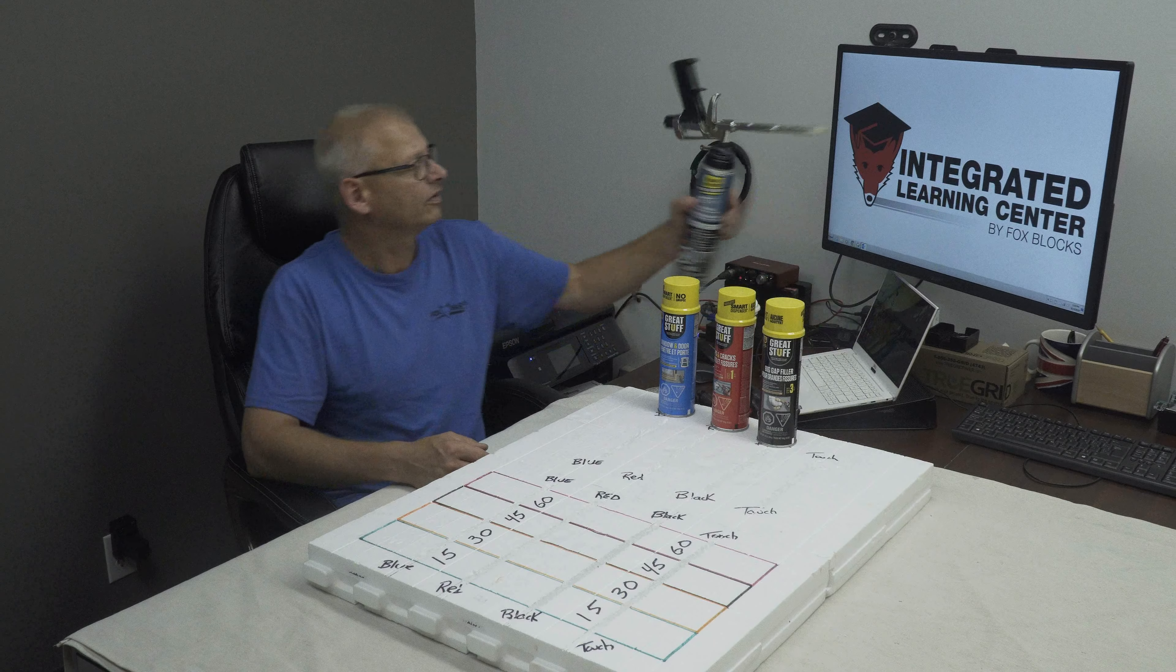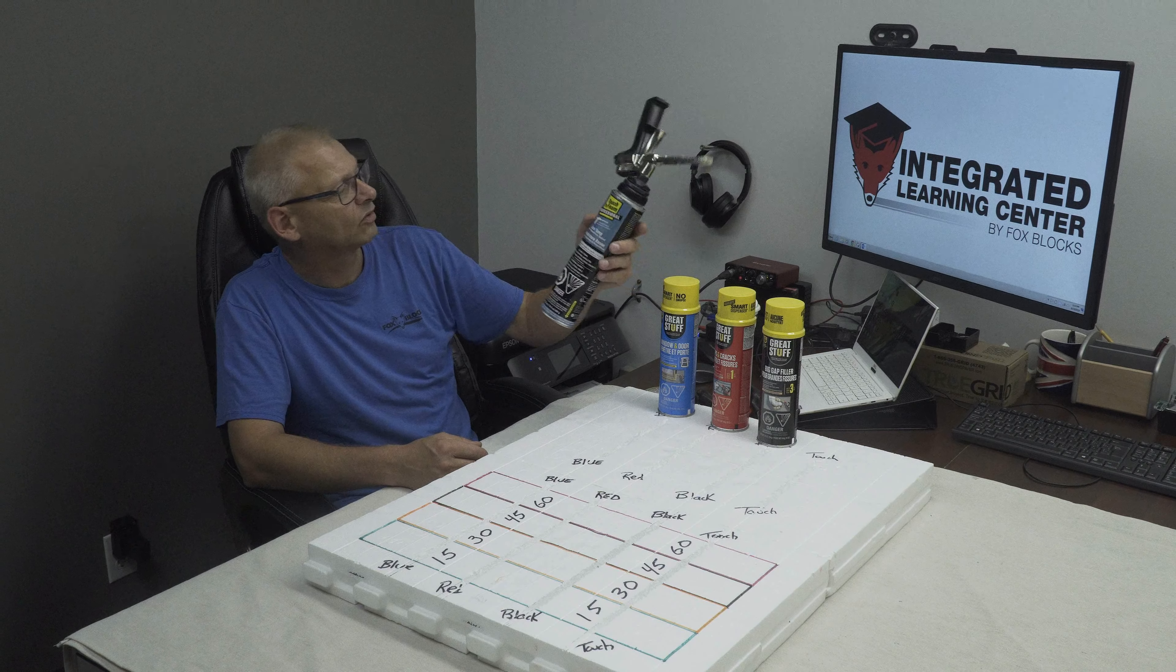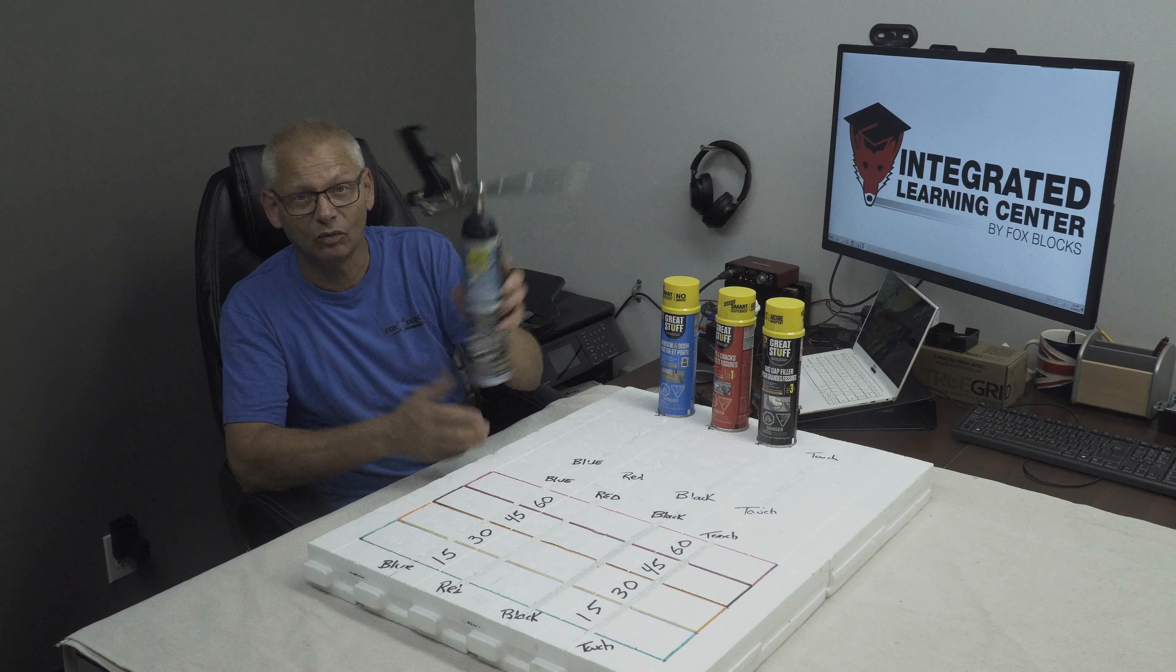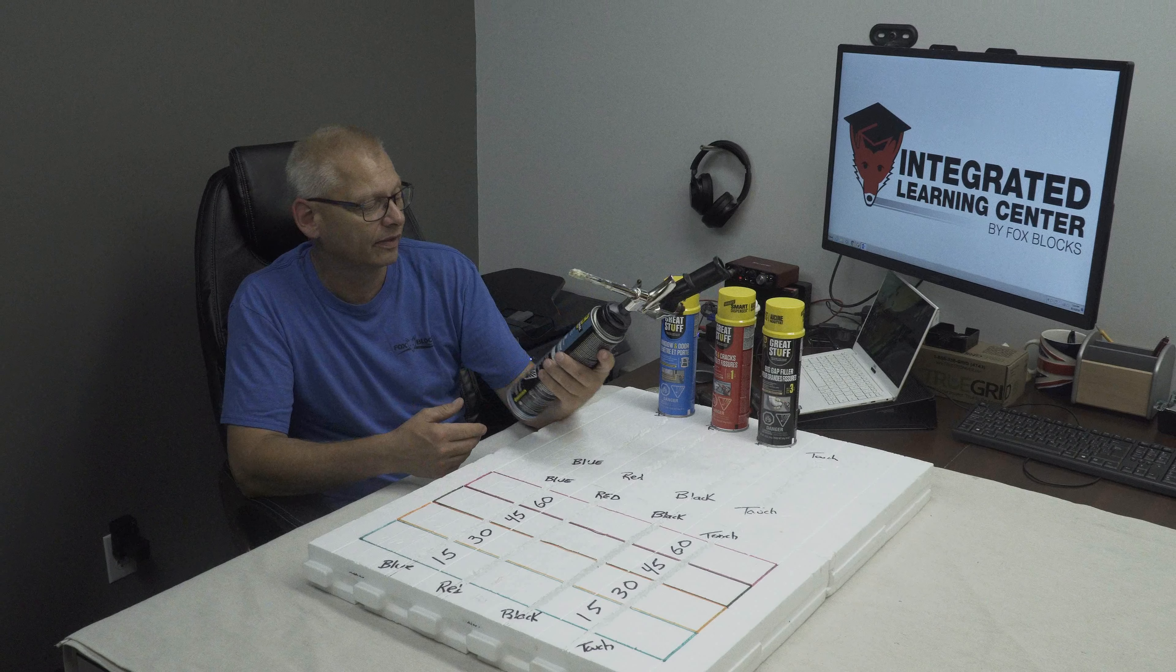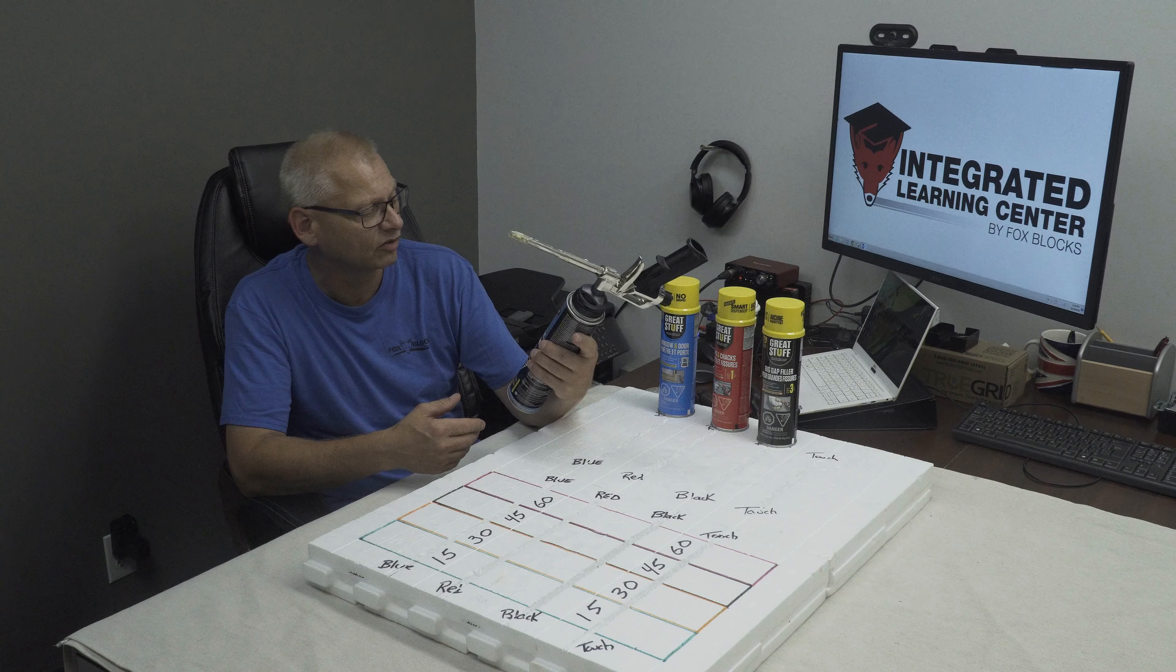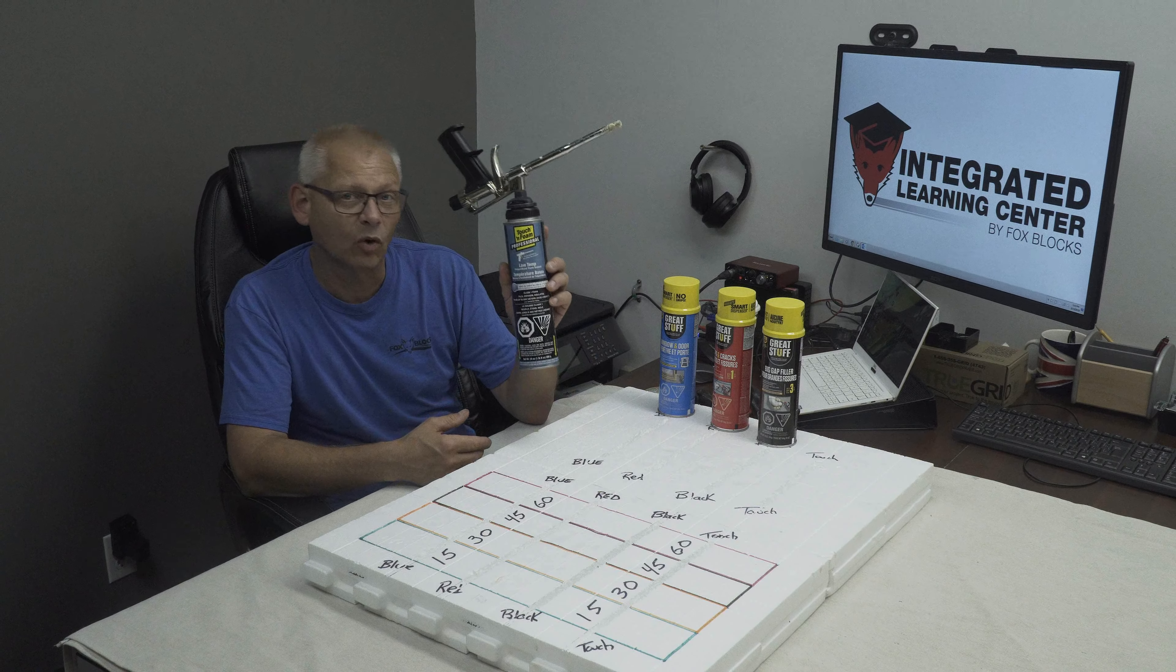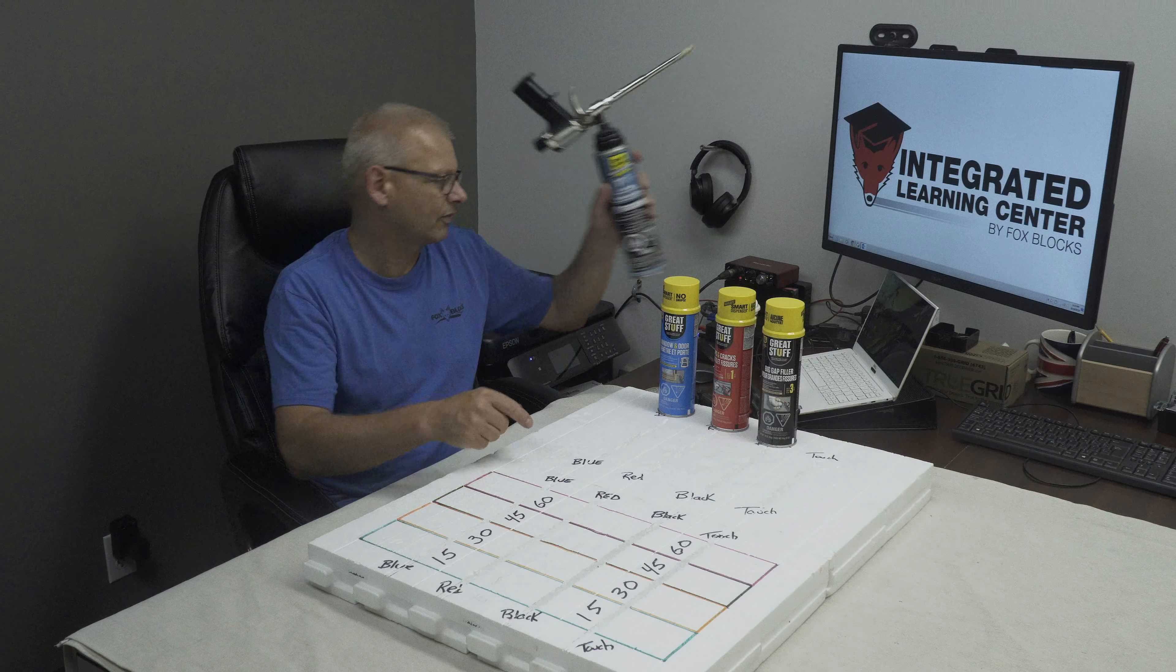I do have another can here. This is Touch and Foam Professional. There's one lumberyard that carries this. Just another brand, right? Another polyurethane spray foam. Now this one is low temperature. It'll go to minus 7 Celsius or 20 degrees Fahrenheit so below freezing. And this one I think cures a little bit quicker. Now I have a little bit in the can here, not much. I'm hoping I have enough for this.